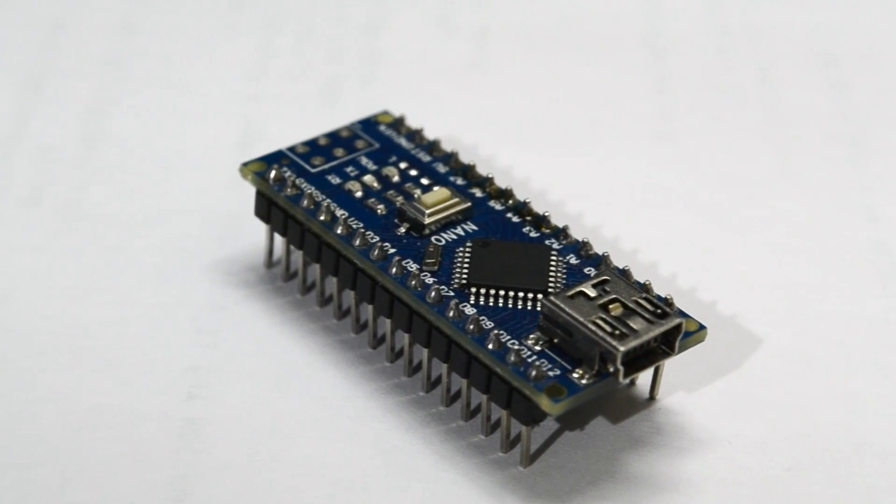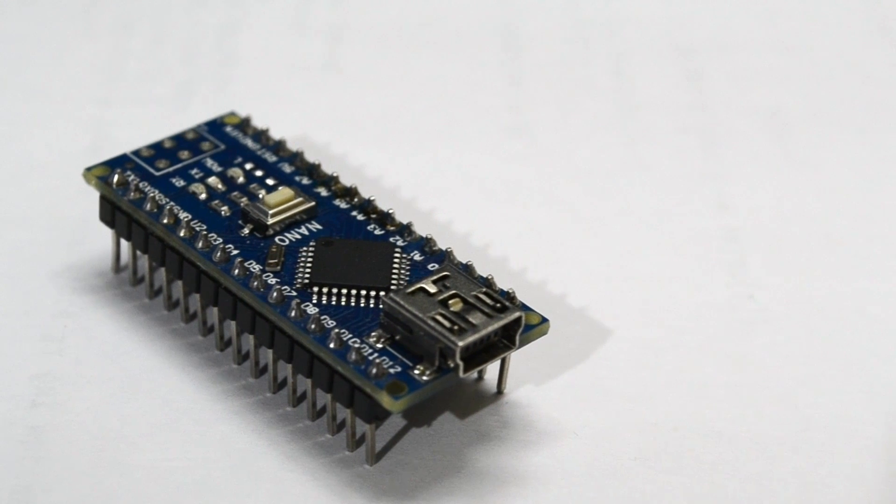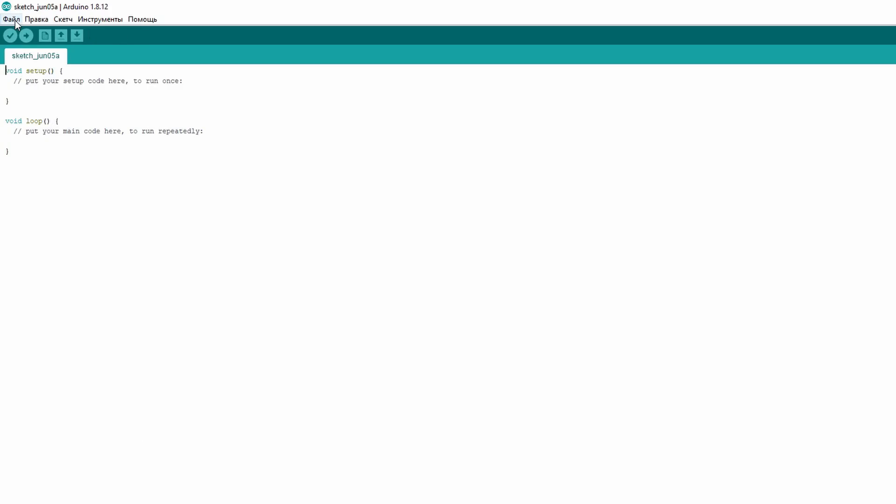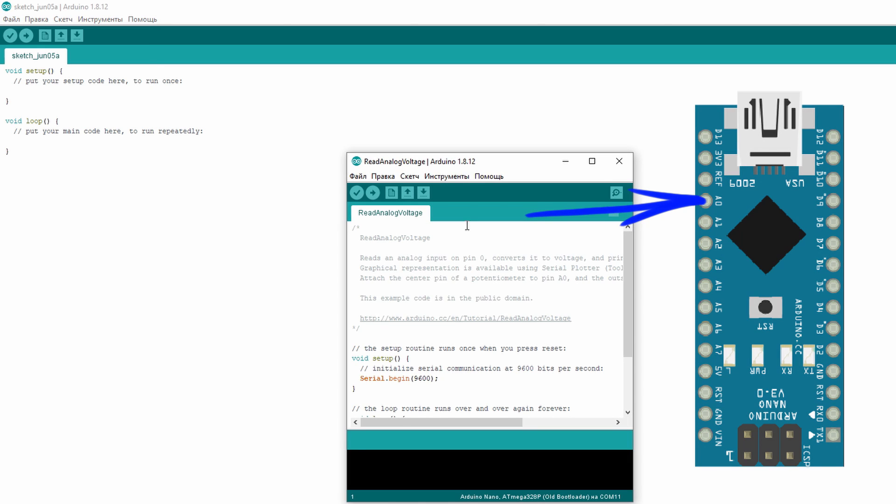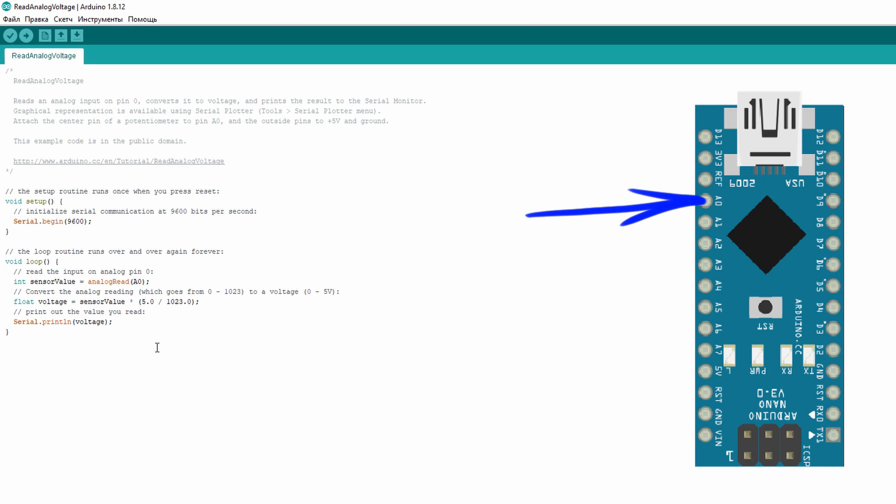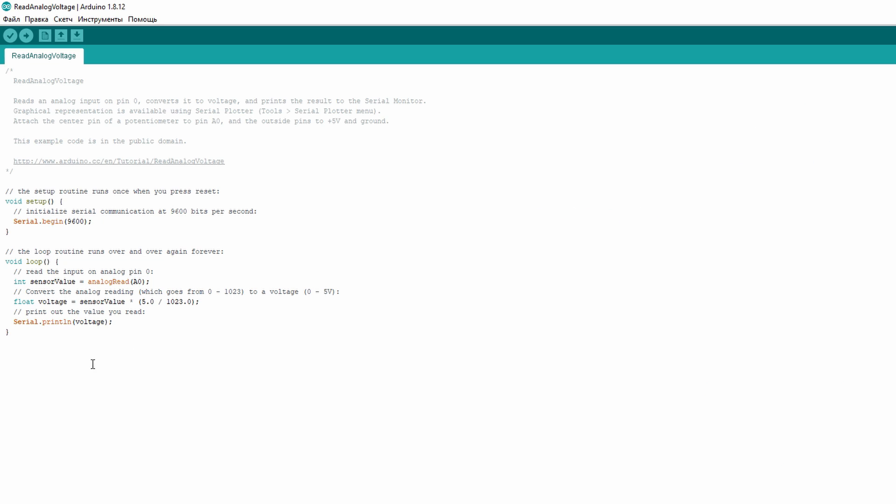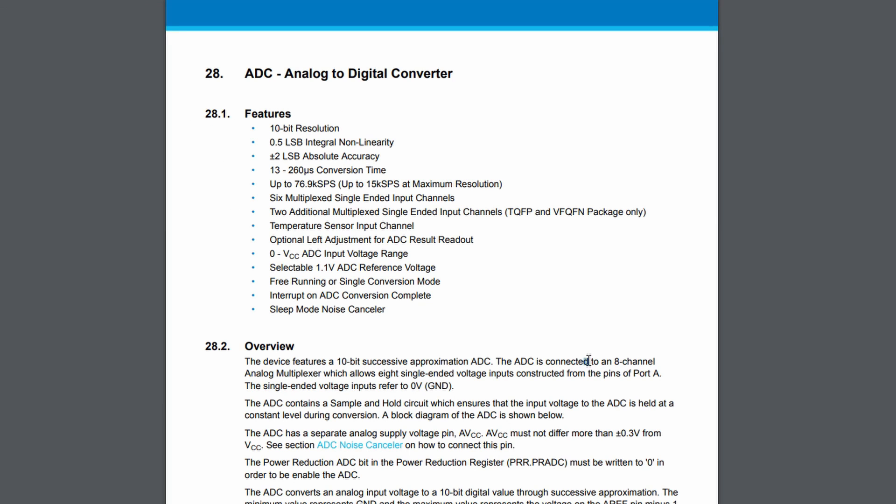Let's start with a simple one, measuring DC voltage. Let's write the code, or rather open a standard example. Pin A0 will be the analog to digital converter input. As a result of the transformation, we get the value of the digital code corresponding to the real voltage. How does it work? The ADC has some voltage reference,